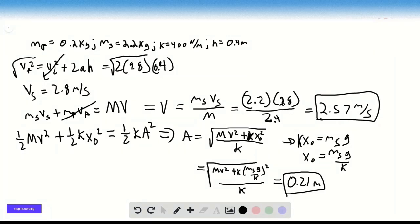And then finally, for part C, I'm just going to put it over here. We know that the period is two pi square root of M over K. If we plug in the total mass 2.4 for M and 400 for K, we get 0.49 seconds.